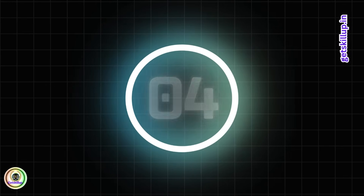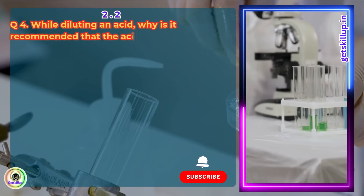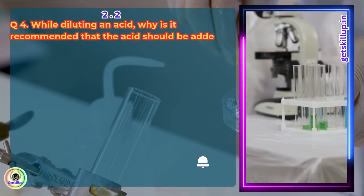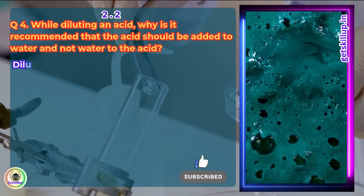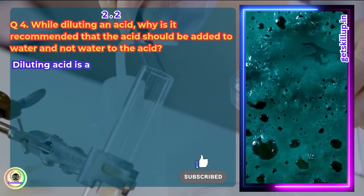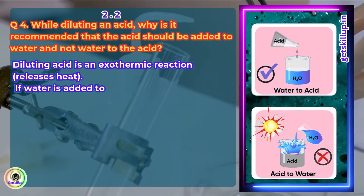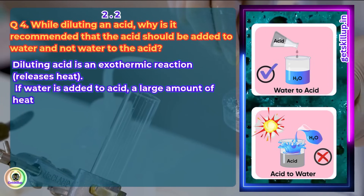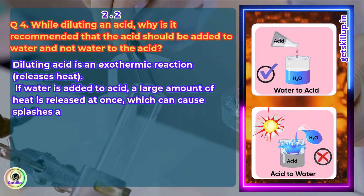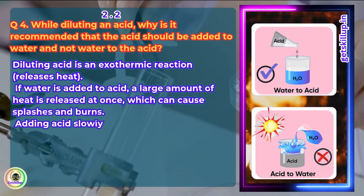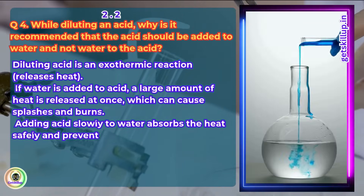Question 4. While diluting an acid, why is it recommended that the acid should be added to water and not water to the acid? Diluting acid is an exothermic reaction that releases heat. If water is added to acid, a large amount of heat is released at once, which can cause splashes and burns. Adding acid slowly to water absorbs the heat safely and prevents accidents.